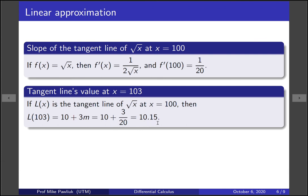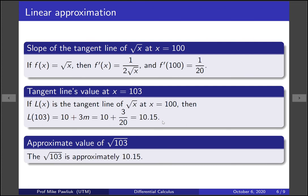So in total the tangent line will output 10.15, so to put this all together an approximate value of the square root of 103 is 10.15 according to the tangent line.